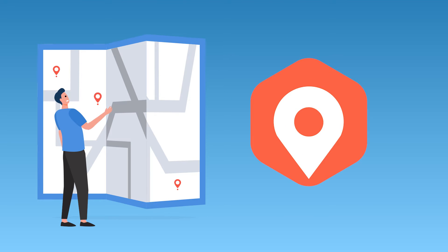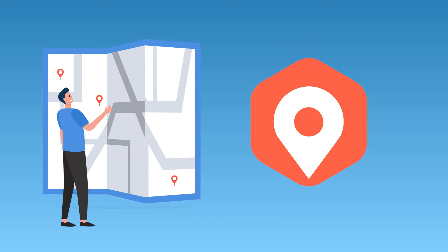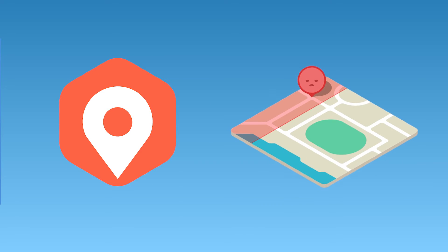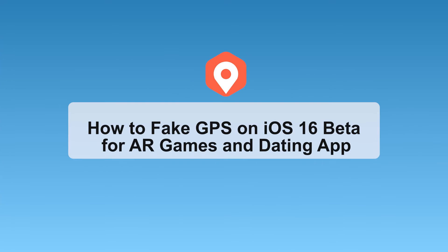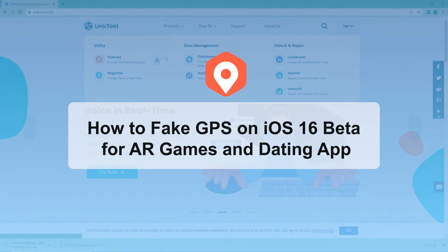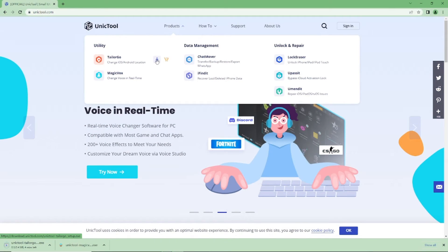Among location spoofer software, Unictal Taylor Go will be one of the top options and is more likely to satisfy you. It offers outstanding features like Two Spot Mode and Joystick Mode. You are able to plan and simulate moving routes without the risk of jailbreaking. Just download and install it on your PC.